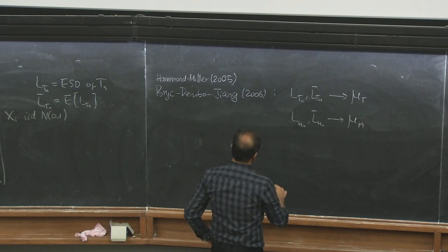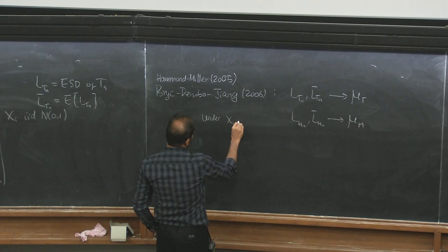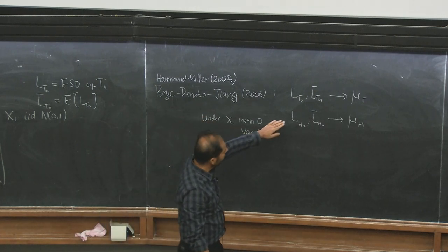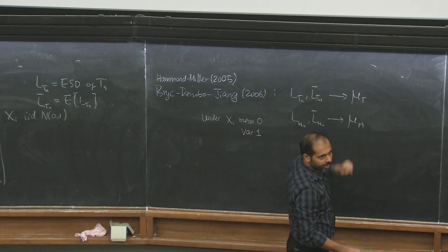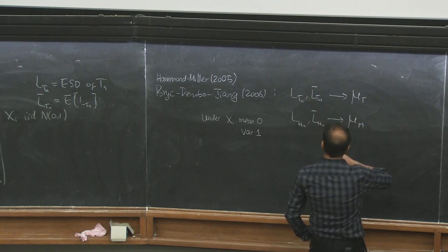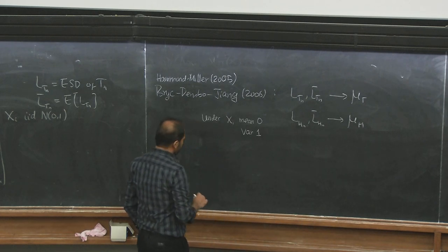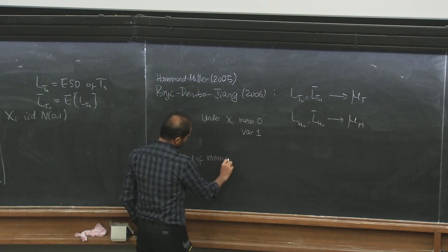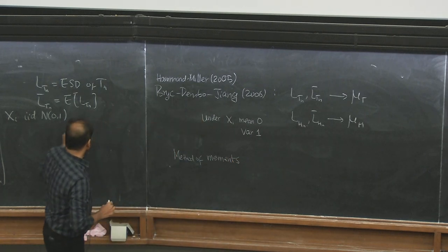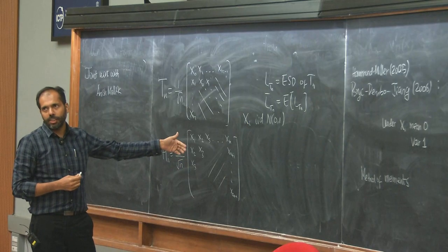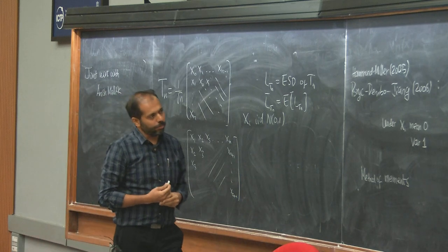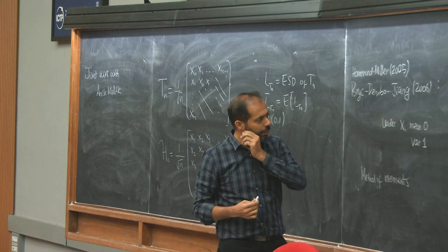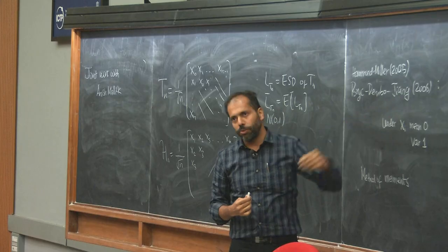These limiting measures mu_T and mu_H are deterministic. This does not require the normality assumption; you only need to assume that the x_i's have mean 0 and variance 1. They showed that these limits don't depend on the distribution — it's the same for all such distributions. The proof was by the method of moments, though the combinatorics is much more complicated here because the same x_i's appear in many places. They found descriptions for the moments and determined unique measures mu_T and mu_H.